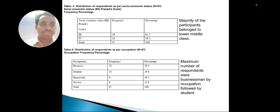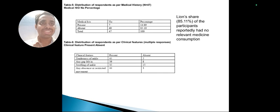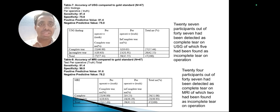The majority of participants belonged to the lower middle class, with the maximum number being businessmen by occupation, followed by students. 85.19% of participants reportedly had no relevant medical or medicine consumptions. Clinical presentations included tenderness of ankle, ankle gap felt, swelling, and absence or restricted movements.